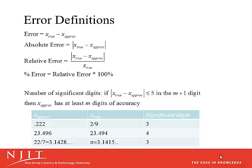First of all, in order to address error, we have to know what the error is. So when we're doing a computation, we're going to end up with an approximate value for whatever it is that we're trying to solve for. That's what we call x-approximate — the computed value that we get — and often there is the true value that we really desire. The error is the true value minus the approximate value. The absolute error is just the absolute value of this error.